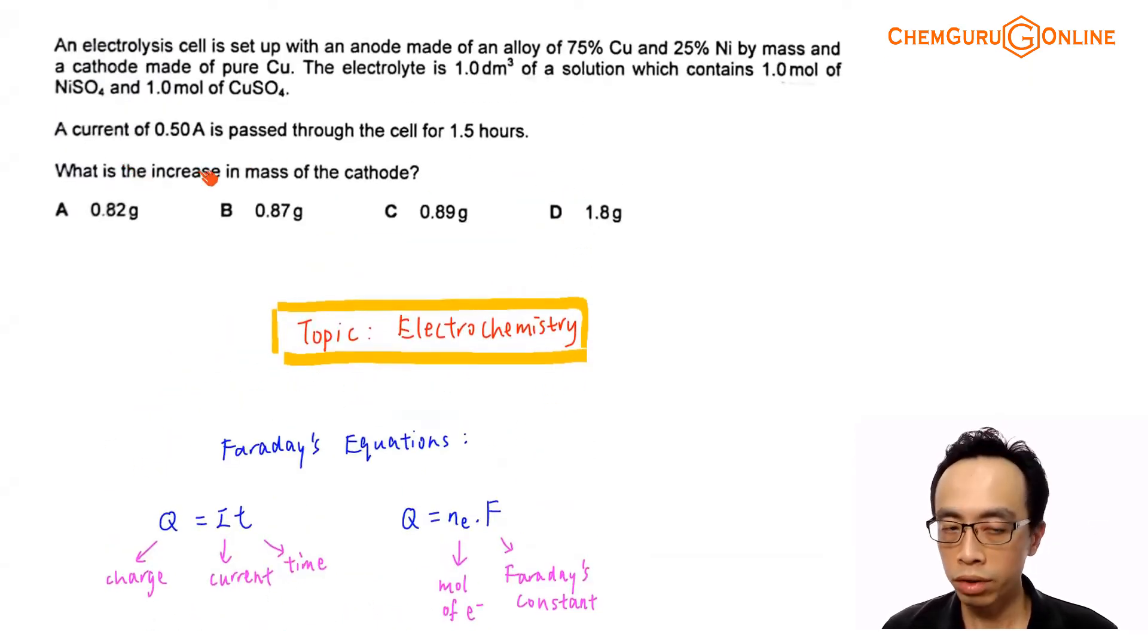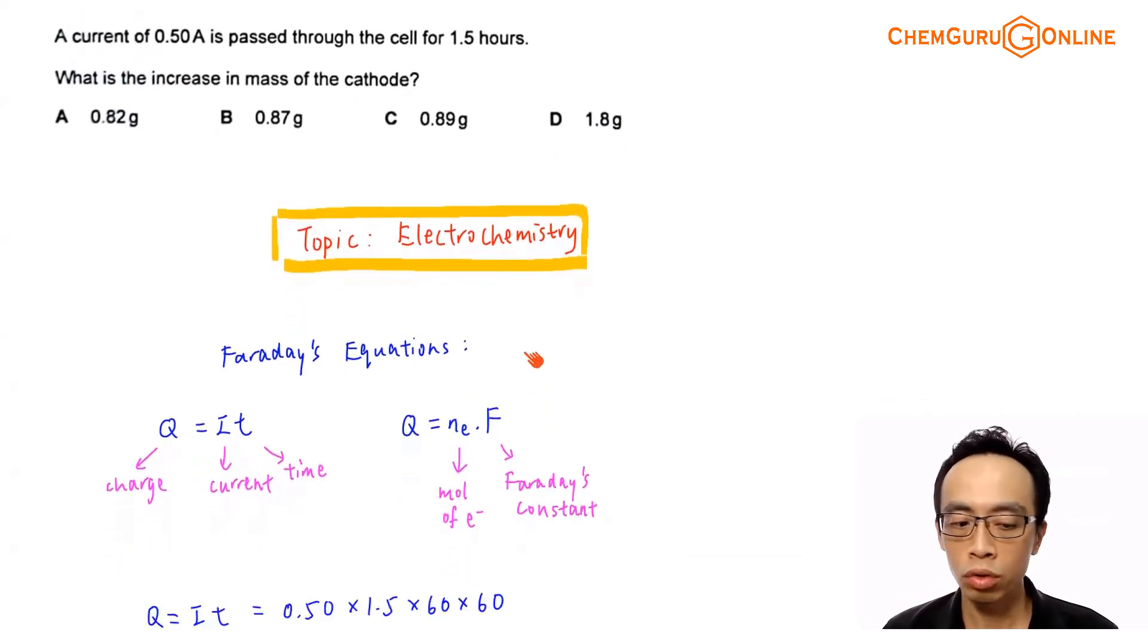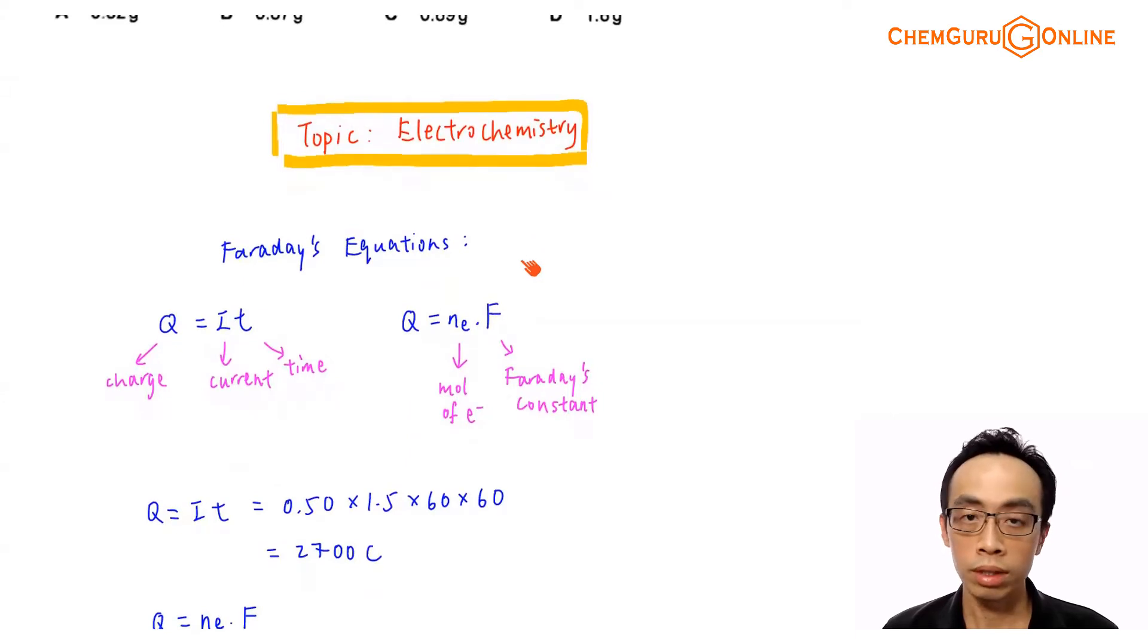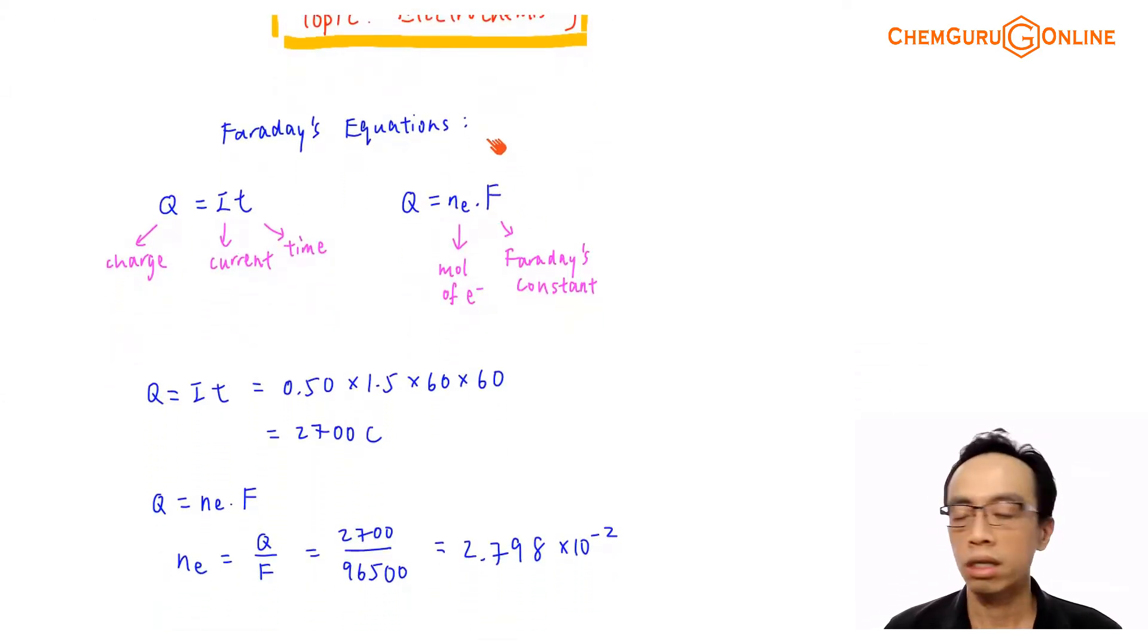Since the question gives us the current and time, first we convert it to moles of electrons. Once I have moles of electrons, the rest of the calculation will be mol concept. What I prefer to do is quickly determine the number of moles of electrons because it's a concept we are very familiar with. Q = IT, the current is 0.5 ampere, time is 1.5 hours, we convert it to seconds, multiply by 60 minutes, multiply by 60 seconds. The quantity of charge involved is 2700 Coulomb.